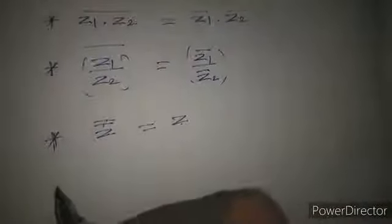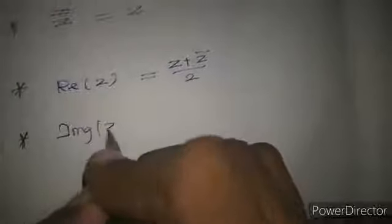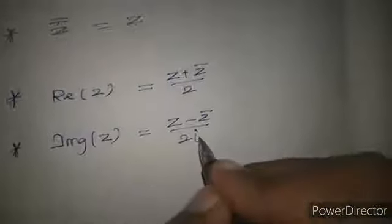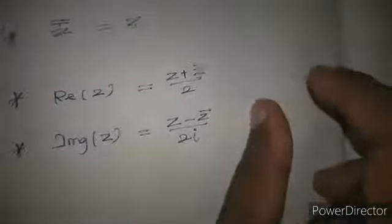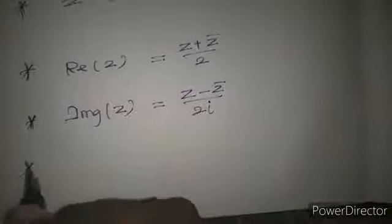The next one is repeated and important. Listen carefully. This one is basic, now this one is very important. The next one: the real part of z equals z plus z bar divided by 2. And the imaginary part of z equals z minus z bar divided by 2i. This is the real part, this is the imaginary part.